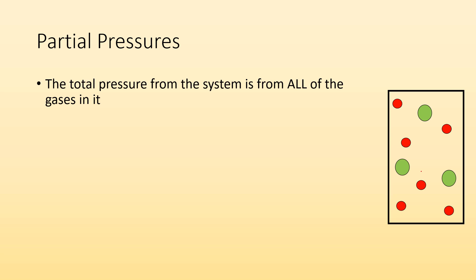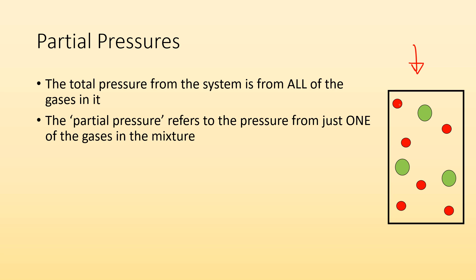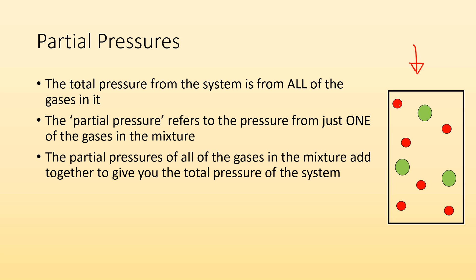So, partial pressures. The total pressure from the system is from all of the gases in it. You can see in this picture, there's a mixture of two different kinds of gases. So the pressure of the whole system is from the pressure of both of those gases. The partial pressure refers to the pressure from just one of the gases in the mixture. The partial pressures of all the gases add together to give you the total pressure of the system.